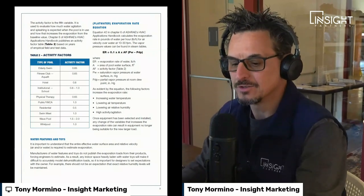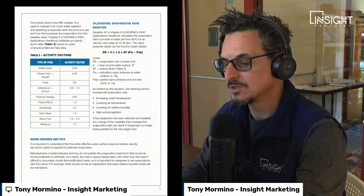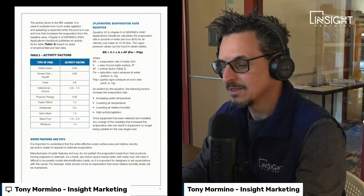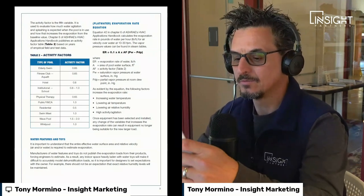It is important to understand that the entire effective water surface area and relative velocity — air and/or water — is required to estimate evaporation for water features and toys. Manufacturers of water features and toys do not publish evaporation loads for their products, forcing engineers to estimate. As a result, any indoor space heavily laden with water toys will make it difficult to accurately model dehumidification loads, so it is important for designers to set expectations with owners — for example, there should not be an expectation that relative humidity levels will be maintained.